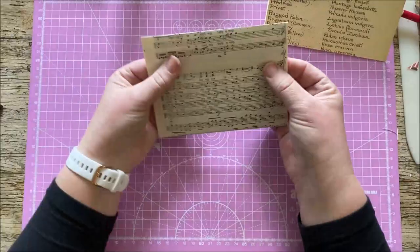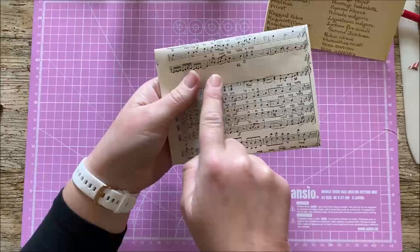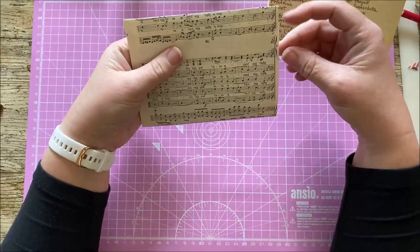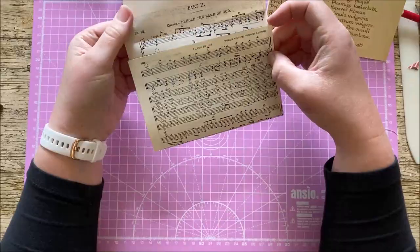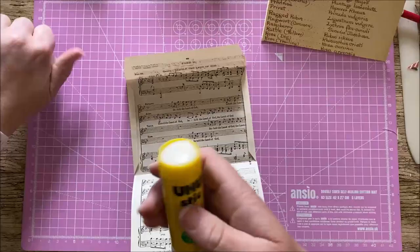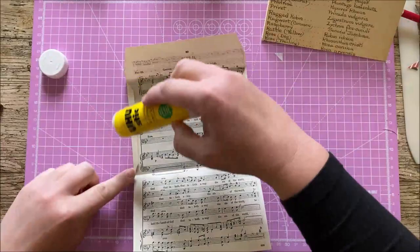When you close it down, when you shut the lid down, you shouldn't be able to see the flap of the envelope underneath. Your cut should come from there. Otherwise you'll be exposing all this bit here. So all you then simply do is glue these closed. So glue the flap there, glue the flap there.